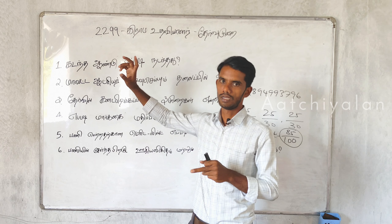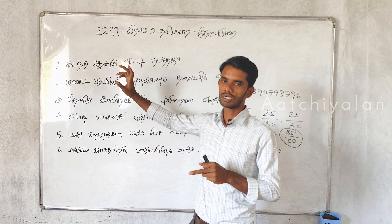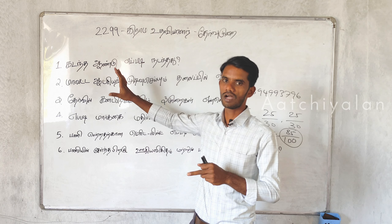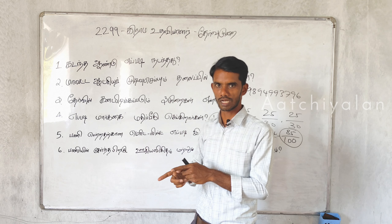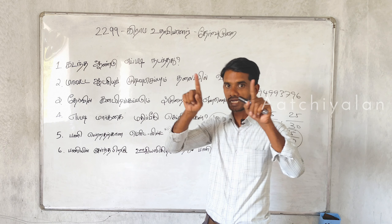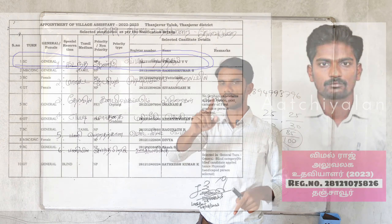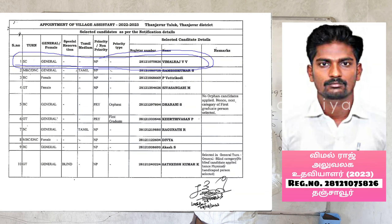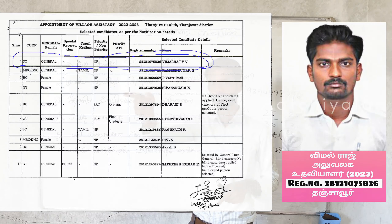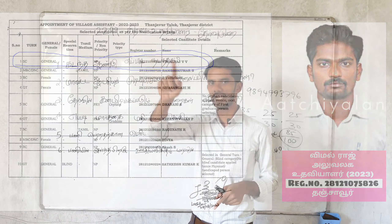The Merit List is put in the Taluk office. If you release a result, a candidate — Vimal Rajin — will come to the list. If you want the serial number 1, you will come to the first position.